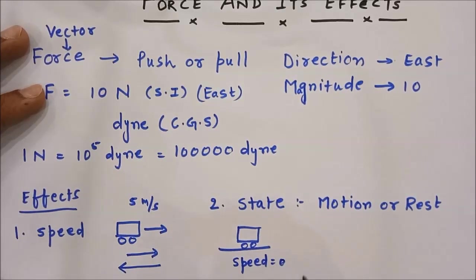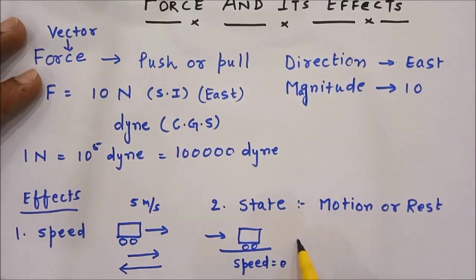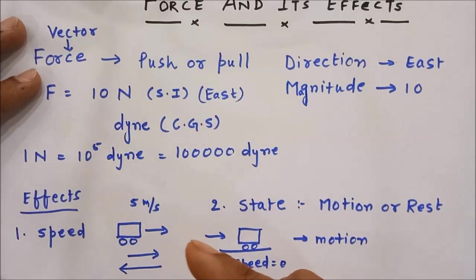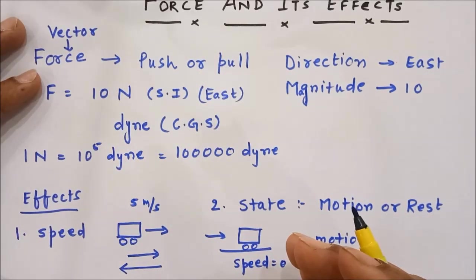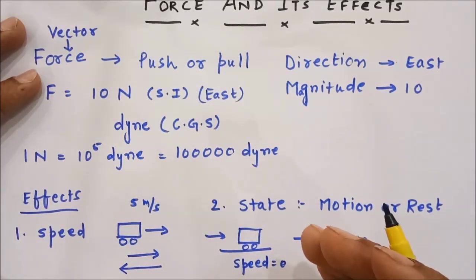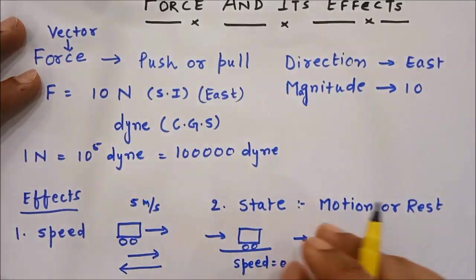And when you exert the force on this car in this direction, it will be in motion. Now opposite to that, if a car is in motion and if you exert a force in the opposite direction, the car will come at rest. So when you are exerting a force on a body, a body in motion may be brought to rest and a body at rest may be brought in motion.